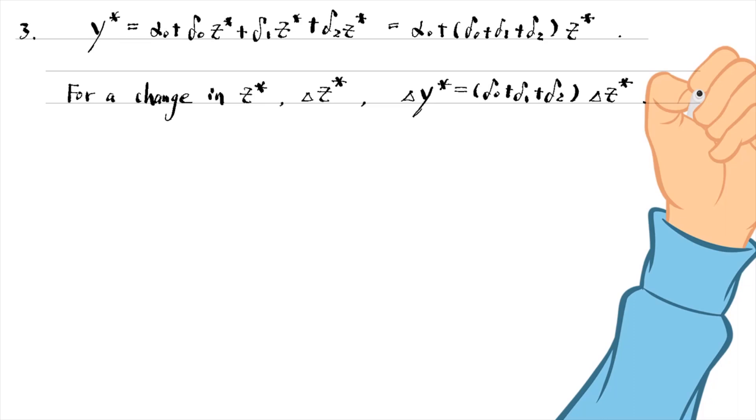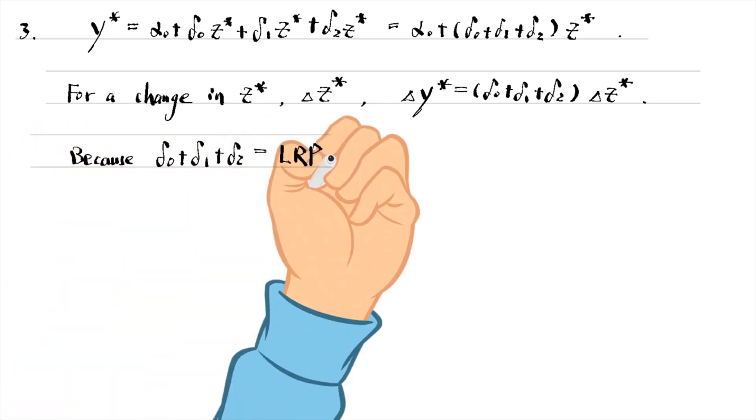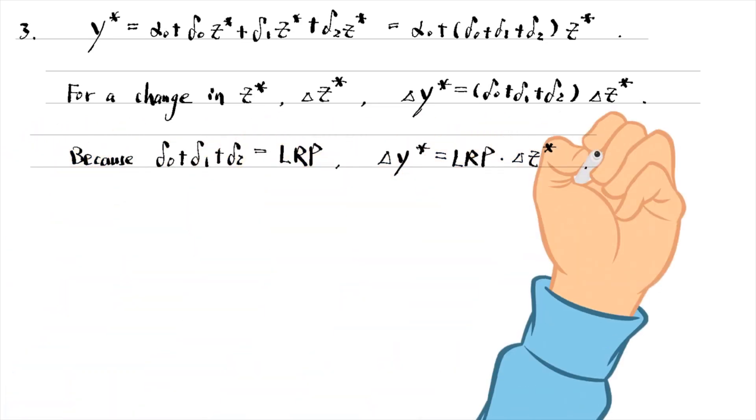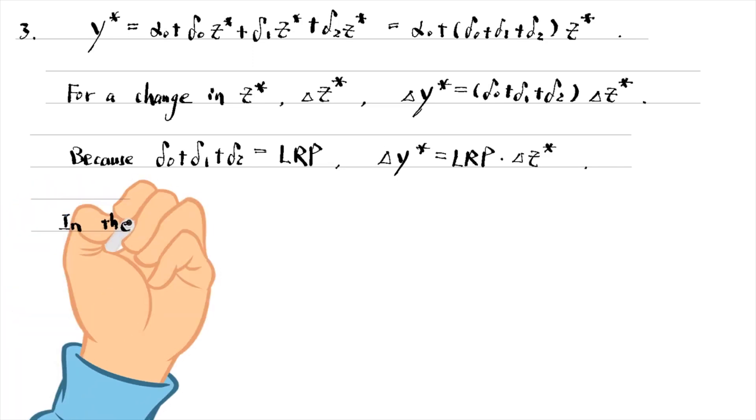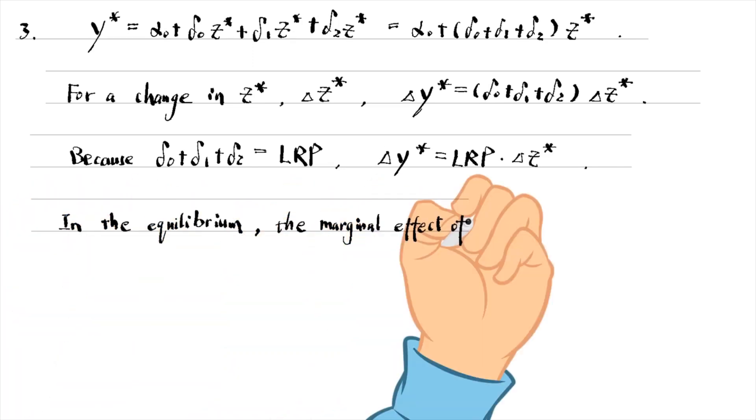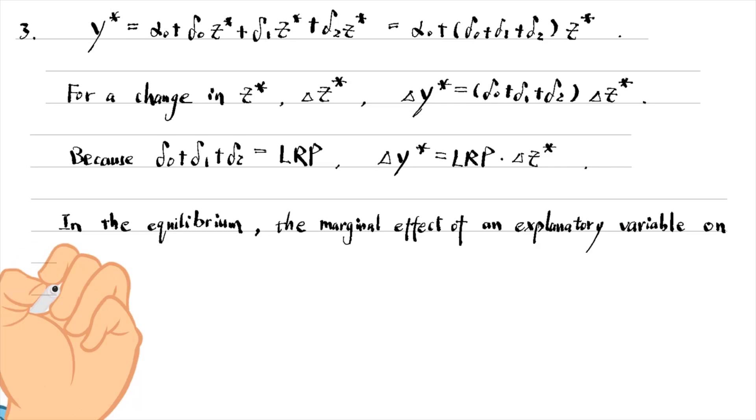Because the sum of the three deltas is the long-run propensity, we can show that in the equilibrium, the marginal effect of an explanatory variable on the outcome variable is the long-run propensity.